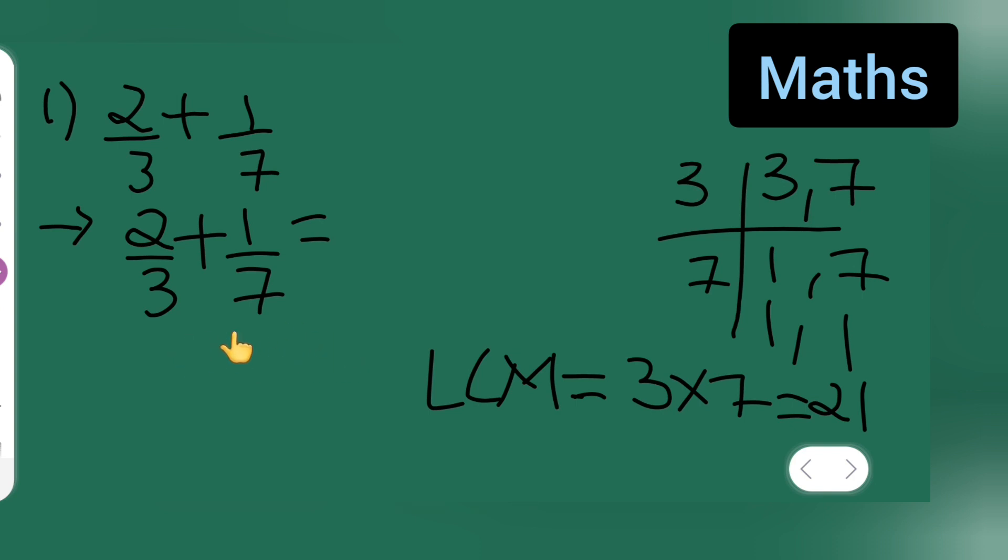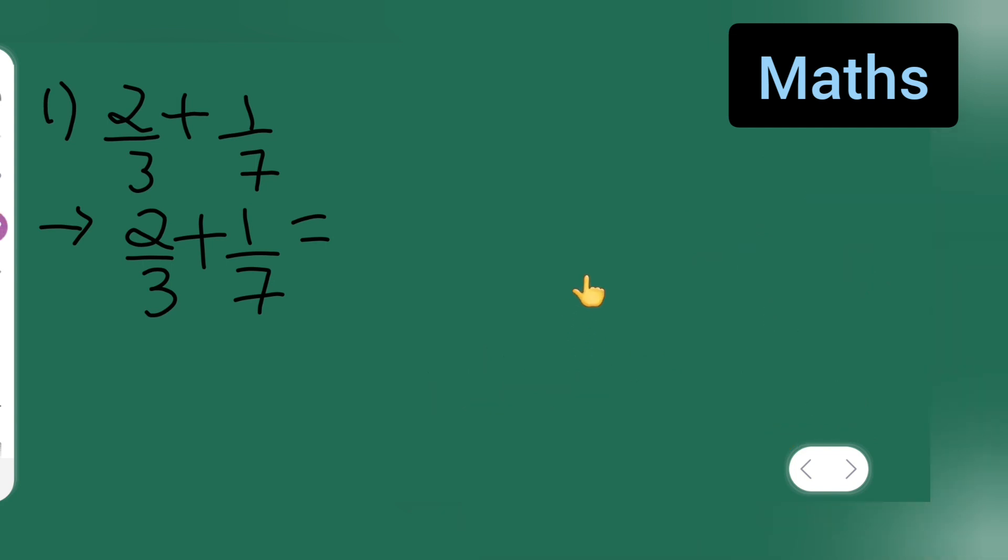The denominator should be 21, because after taking the LCM the denominator should be 21, right? So let me erase this, you can note this down. So now what you'll have to do is 2 multiplied...